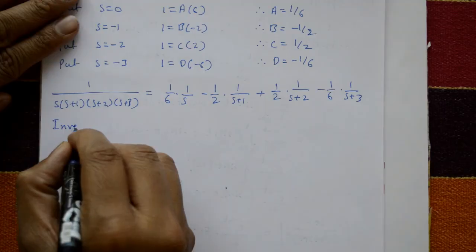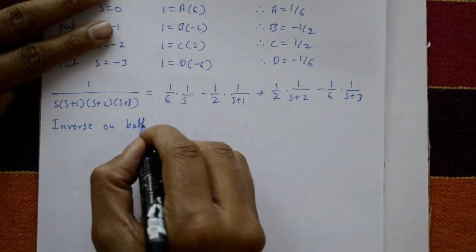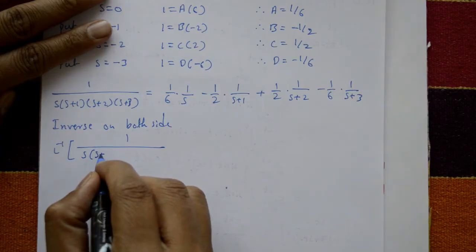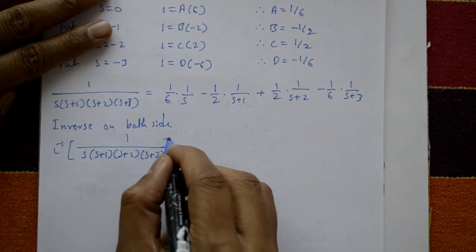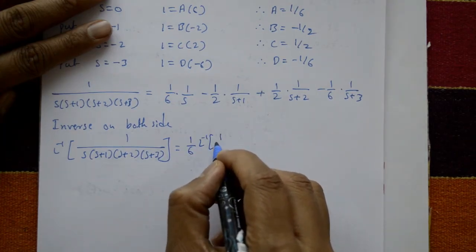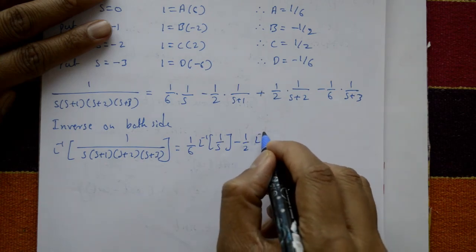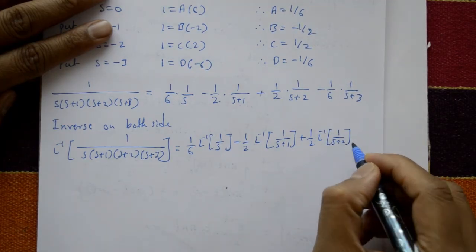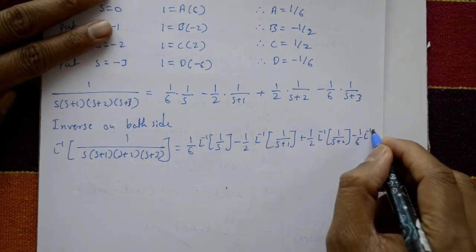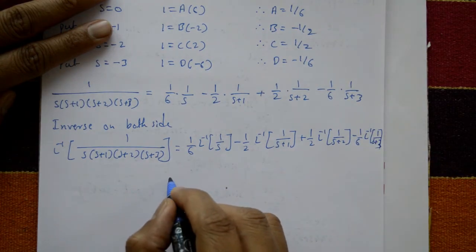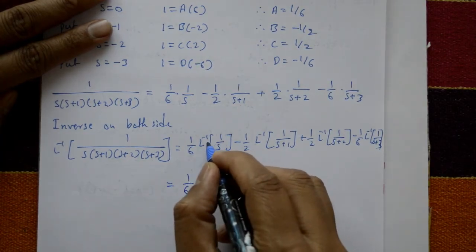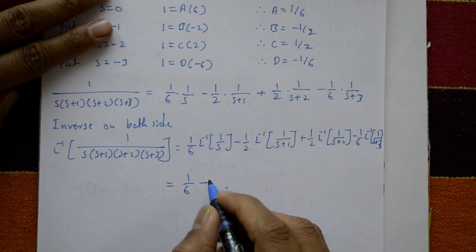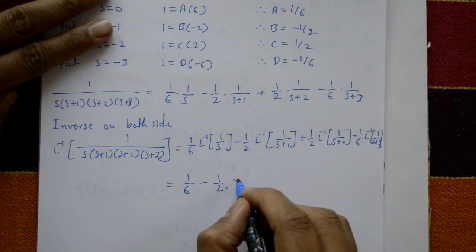Taking the inverse Laplace transform: inverse of 1 upon s into s plus 1 into s plus 2 into s plus 3 equals 1 by 6 times inverse of 1 upon s, minus 1 by 2 times inverse of 1 upon s plus 1, plus 1 by 2 times inverse of 1 upon s plus 2, minus 1 by 6 times inverse of 1 upon s plus 3. The inverse of 1 upon s is 1.